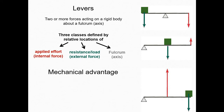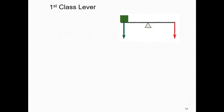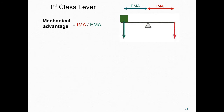When it comes to appreciating the function of levers, a key concept is mechanical advantage. Knowing the mechanical advantage informs us about how we can move heavy loads with small forces or how we can move distal segments quickly. In a first class lever, the applied force or effort is on the opposite side of the fulcrum to the load force. To calculate the mechanical advantage for any lever, we divide the length of the external moment arm by the length of the internal moment arm. The external moment arm is the distance of the line drawn from the fulcrum point to the line of action of the external force, perpendicular to the force vector.